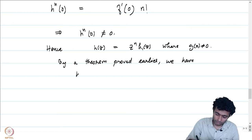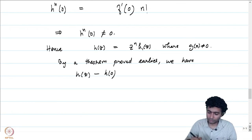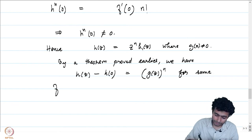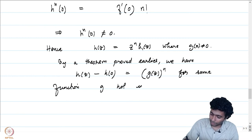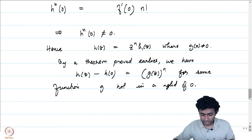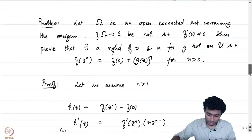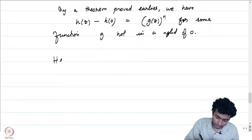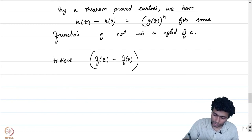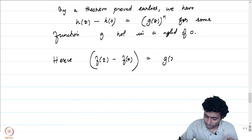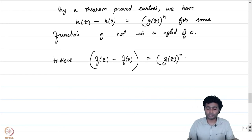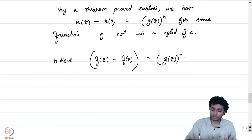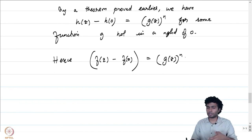But h(0) = 0 and h(z) = f(z)^n − f(0). Hence f(z)^n − f(0) = g(z)^n. We know that g is injective in a neighborhood of 0 and maps 0 to 0. We can finally write f(z) − f(0) as g(z)^n, which is precisely what we were asked to prove.